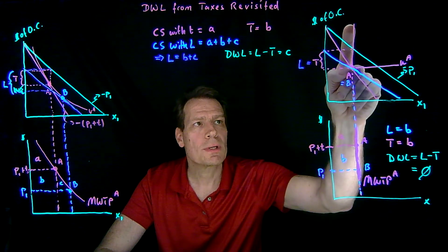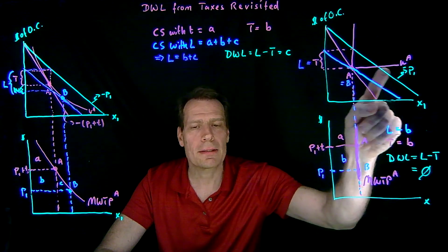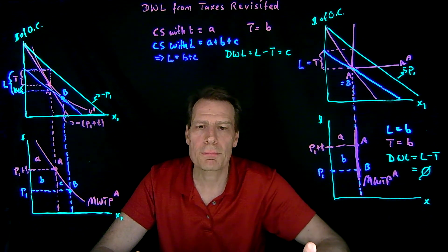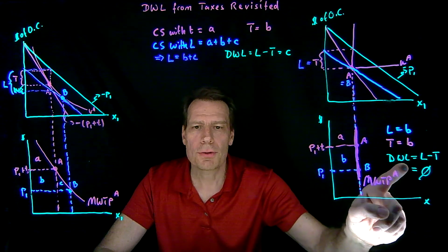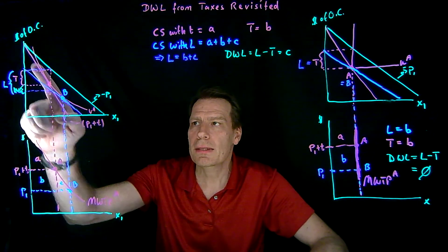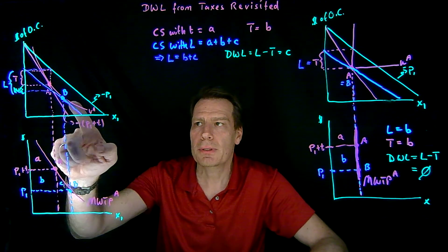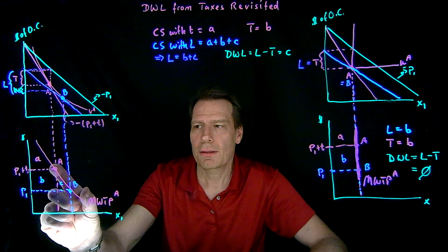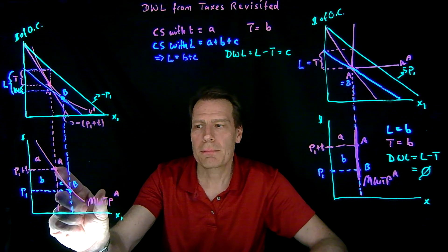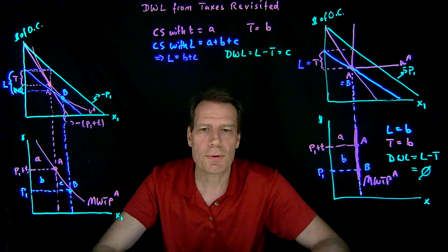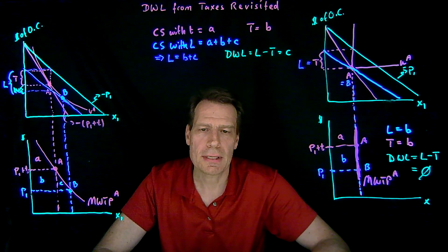So we see again that when we remove substitutability in preferences, the deadweight loss disappears. The greater the substitutability, the farther apart points A and B will be — both in the consumer diagram and on the marginal willingness to pay graph — and so the bigger that deadweight loss triangle becomes.